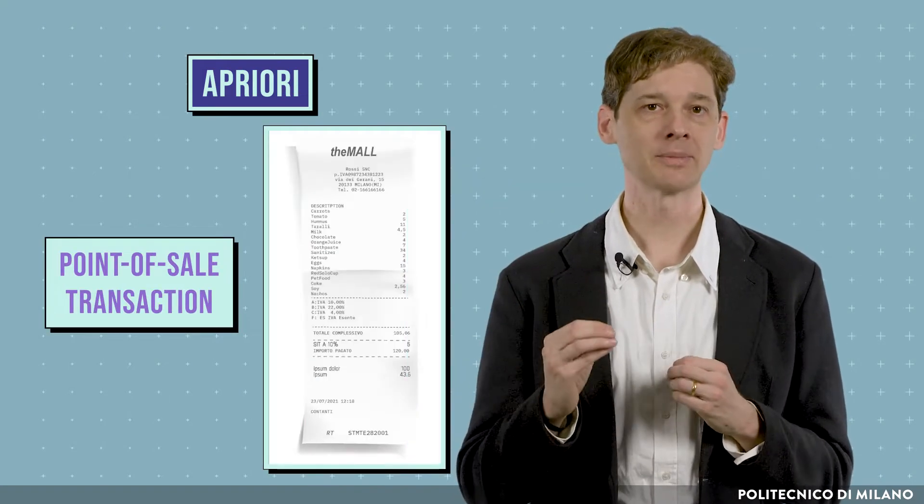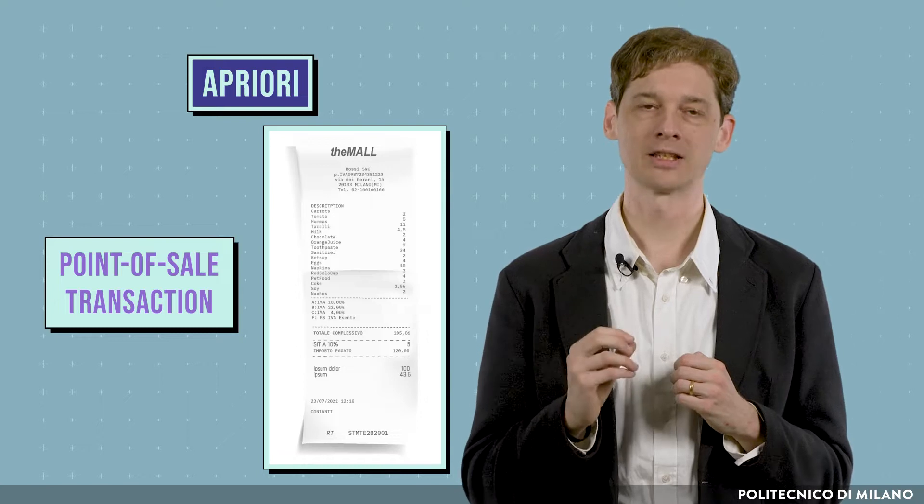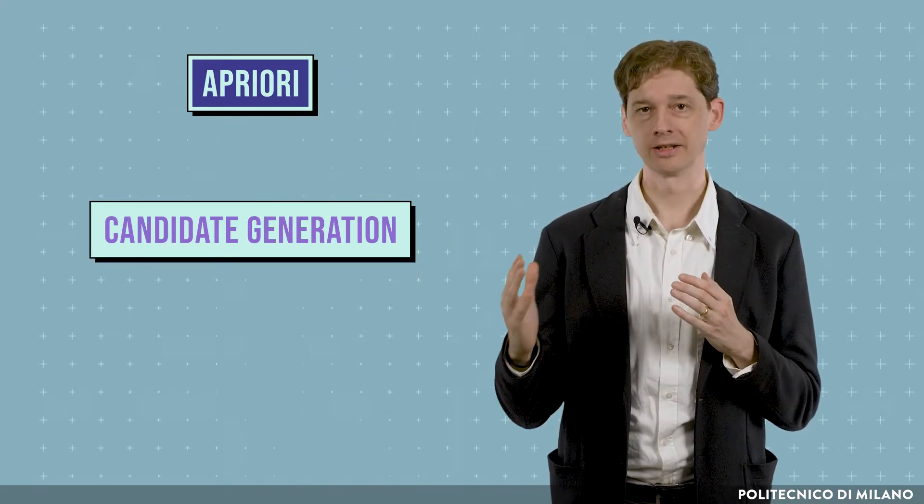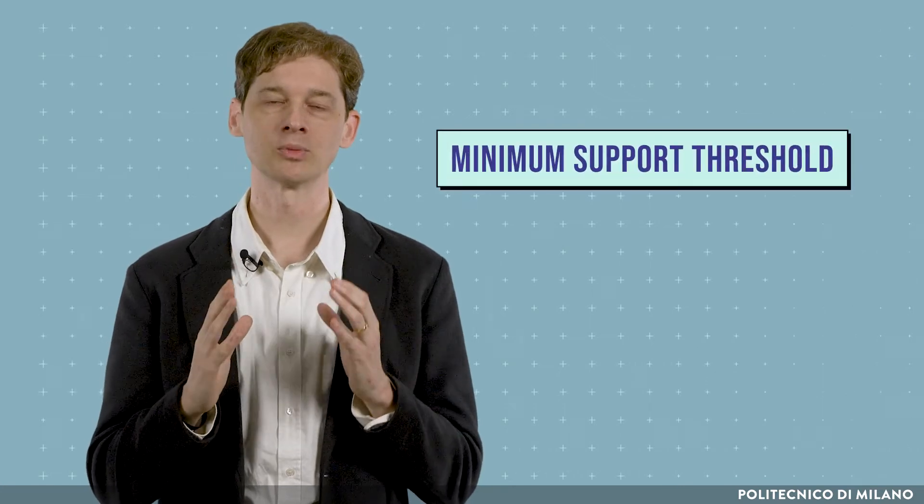One of the oldest and most frequently used algorithms for discovering association rules is called Apriori. It is designed to operate on datasets containing transactions, such as point-of-sale transactions, which represent items bought together in a single basket by a customer. Apriori uses a bottom-up approach, in which frequent subsets are extended one item at a time — a step known as candidate generation — and groups of candidates are tested against the data. The goal of this phase is to generate all the subsets of items with a number of occurrences larger than a minimum support threshold.